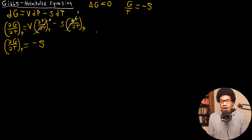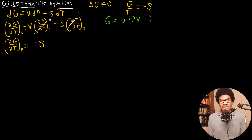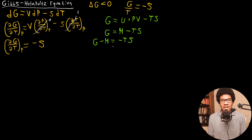We can derive another Gibbs energy expression that will also be equal to negative S. Starting from the general definition of the Gibbs energy: G = U + PV − TS. Since U + PV is the enthalpy, we get G = H − TS. Bringing H to the other side gives G − H = −TS. Dividing both sides by temperature, we end up with (G − H)/T = −S.